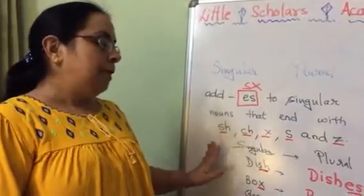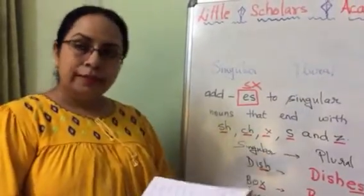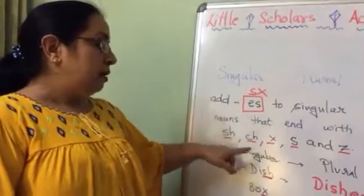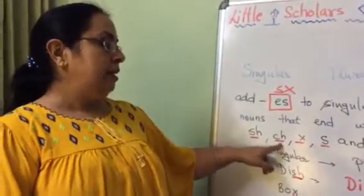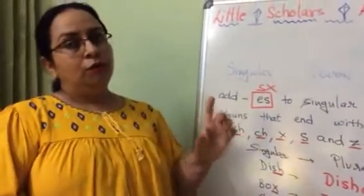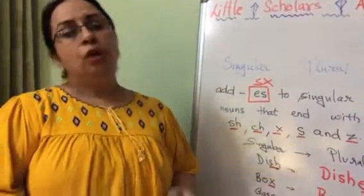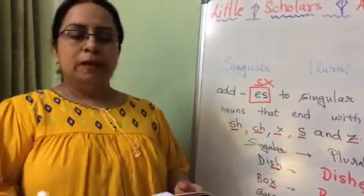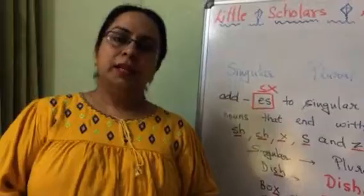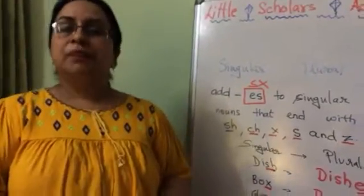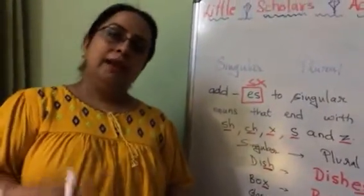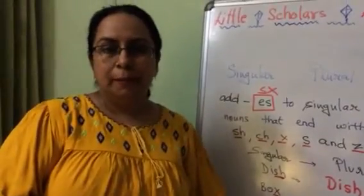All right? Toh aap yeh work apna achhe se karo, neatly karo. Dhyan rakho ki end mein kya a-raha hai — s-h, x, s aa raha hai. Toh agar woh word ke end mein a-raha hai, toh usme hum e-s put karenge to change it to plural. Watch the video carefully and do your work. Okay, bye!